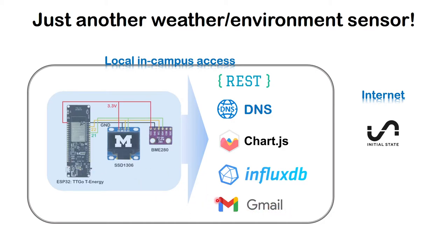If you don't have access to any of this, there's a company called Initial State that has a time-series database on the internet — very similar to what InfluxDB does — and they also have REST APIs you can use to send sensor data. Unfortunately I can't share my code as it was done as part of my work, but if you're from an educational institution, send me an email and I'm open to sharing the source code.